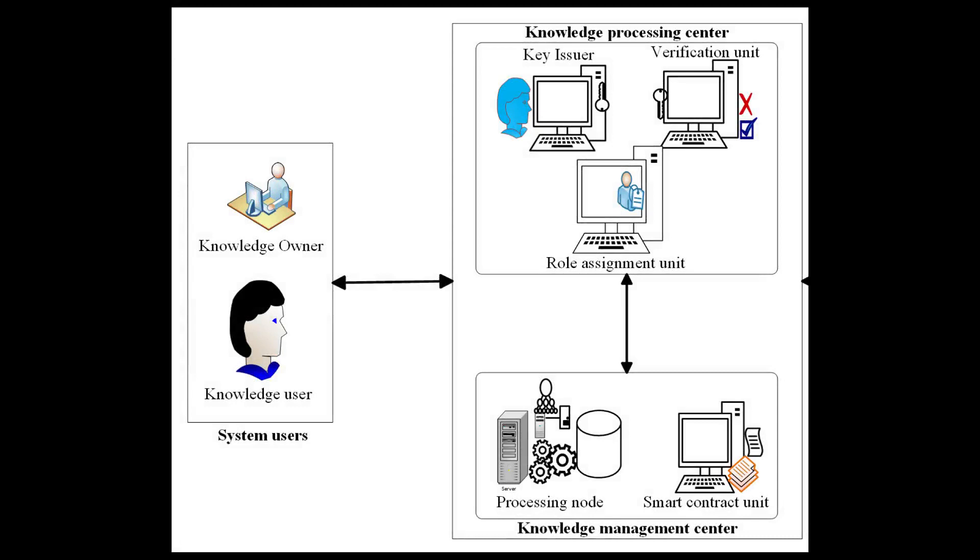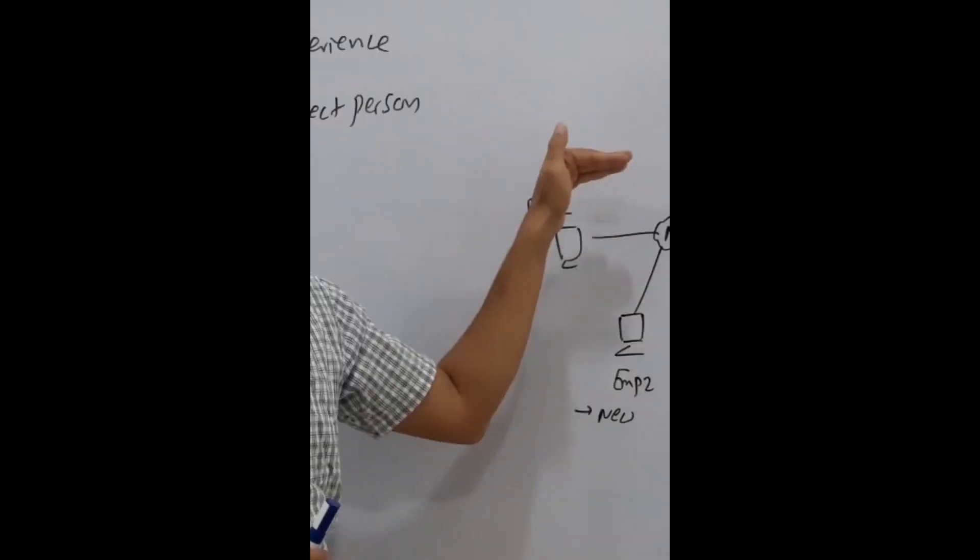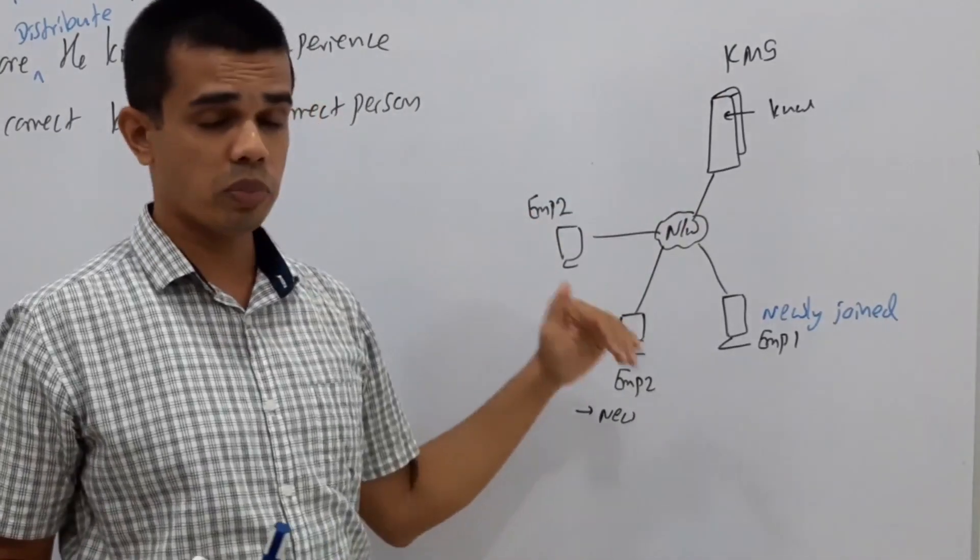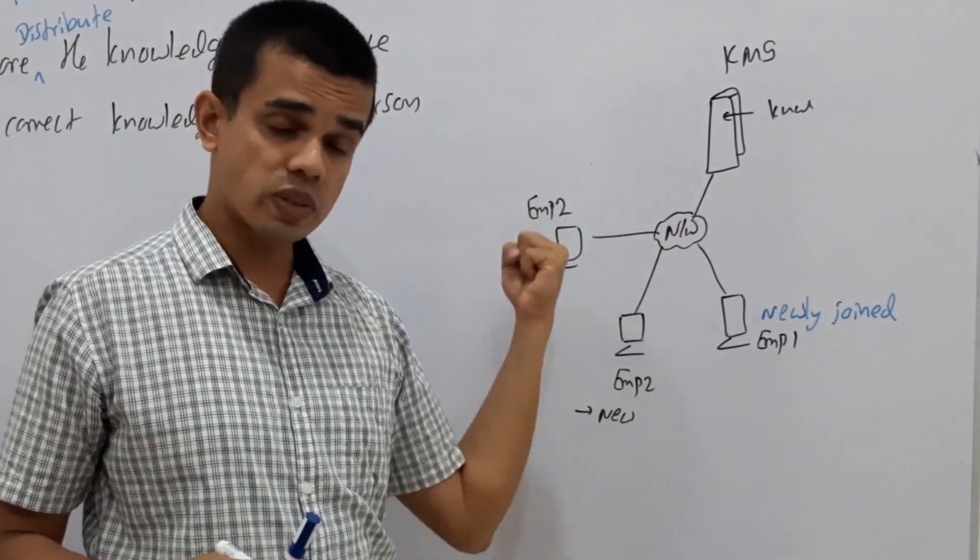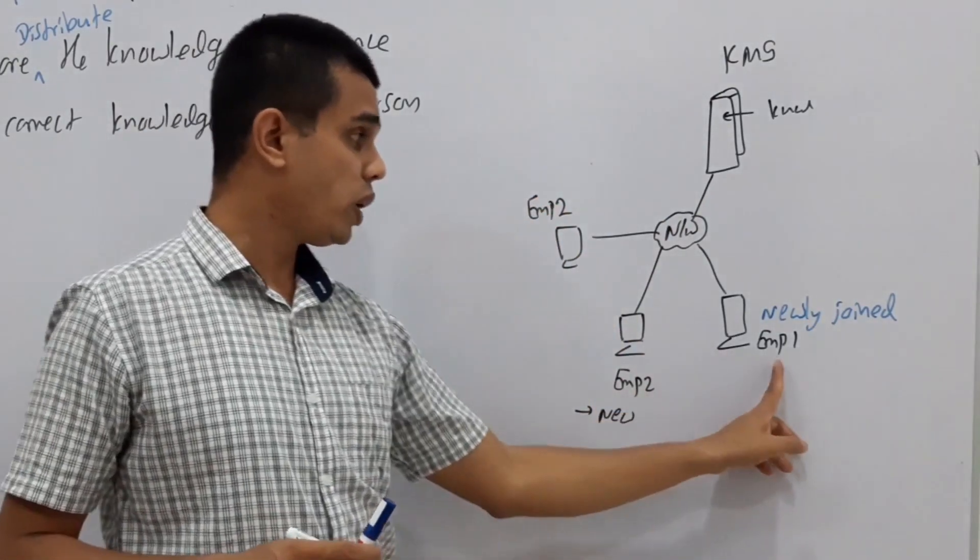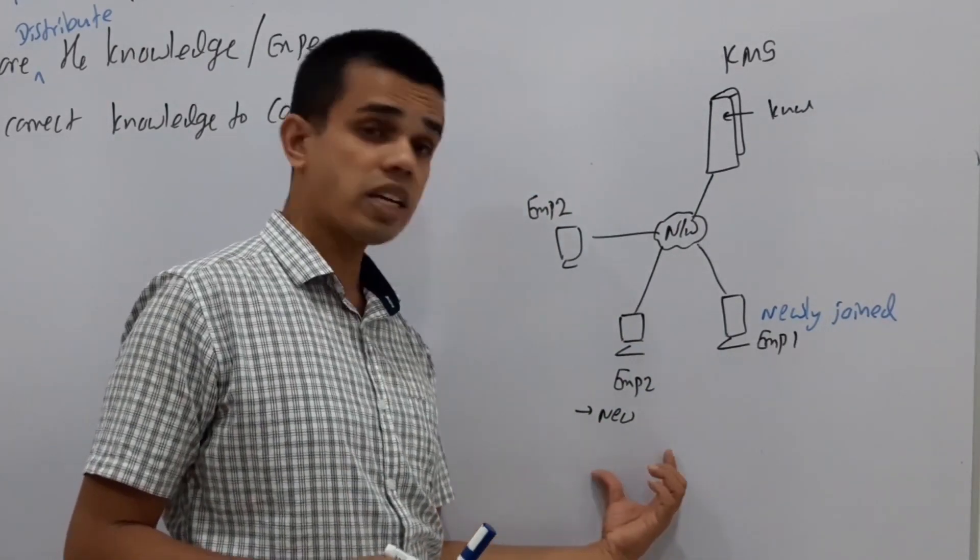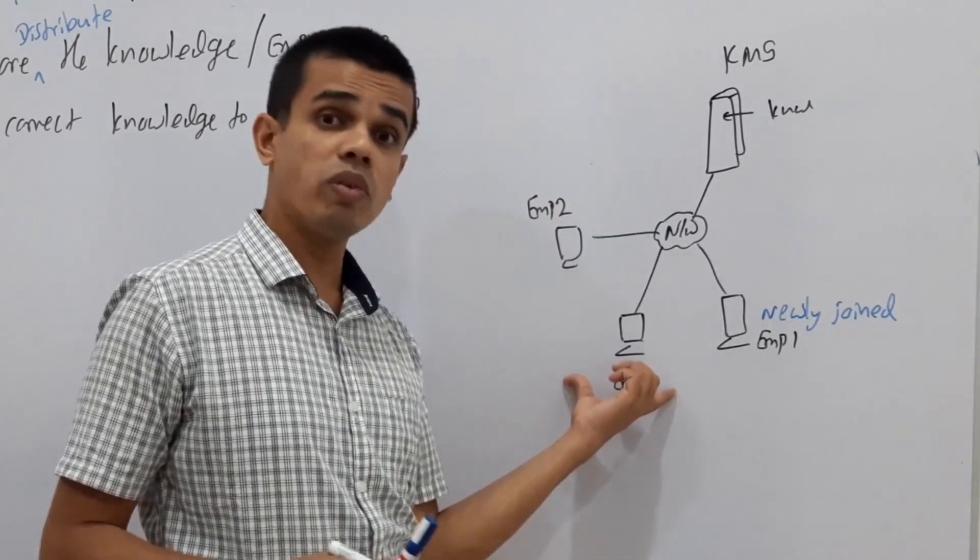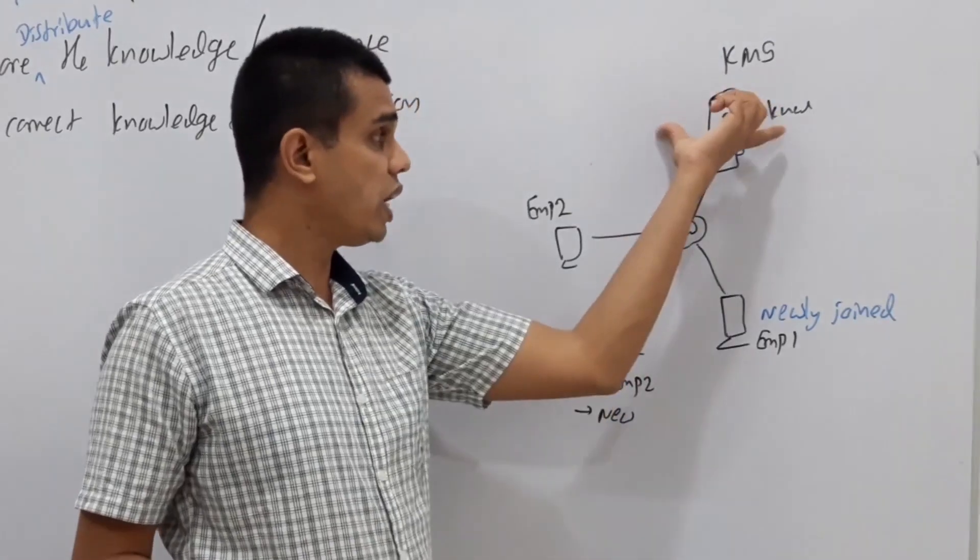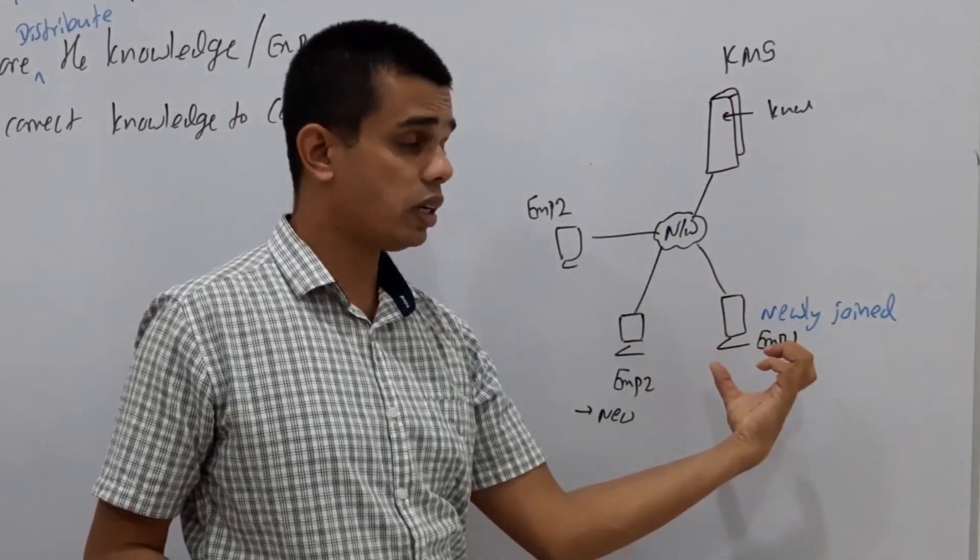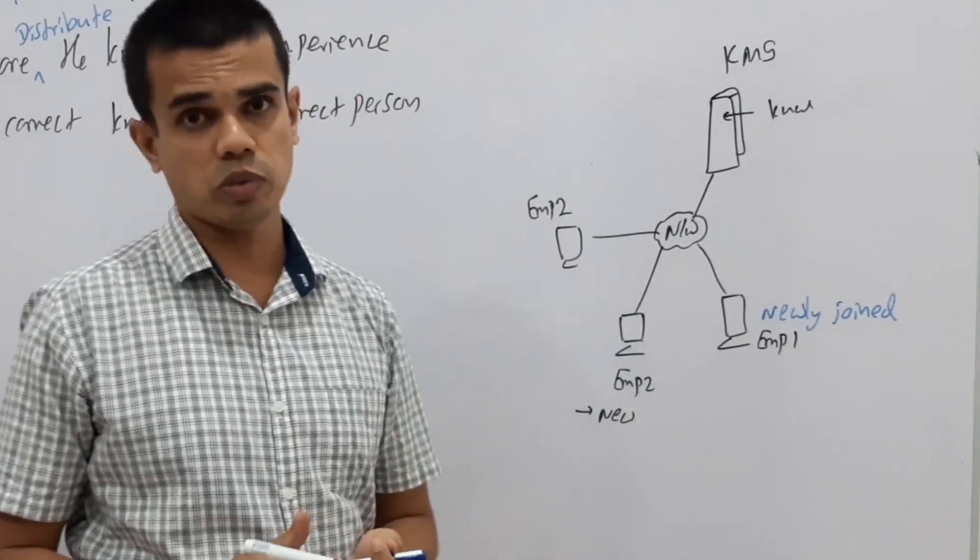Whenever another employee needs or meets with the same problem, he may query that, inform that to the KMS through the interface they have, through the software they have. He is searching that problem and KMS gives the correct information, correct knowledge to the right person. The idea behind KMS is giving the correct expected knowledge to the right person through the ICT-based system without wasting time.